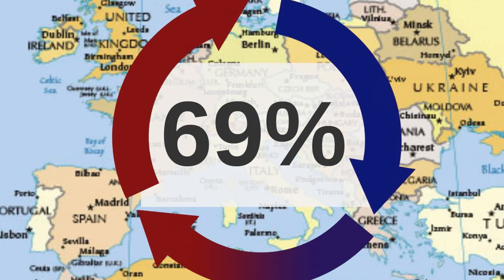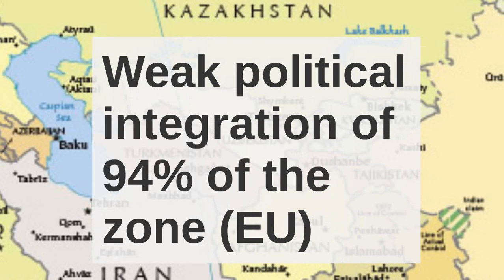In Western Europe, 69% of total exports go to other Western European countries. Western Europe, however, is not as well integrated — there's relatively weak political integration, but 94% of the Western European economic zone is covered. That 94% figure will soon drop down to 78% with the impending exit of the United Kingdom from the European Union. Thus, very soon, the Western European zone is going to become a weakly politically integrated zone in which only 78% of production is in the main economic entity of the zone.